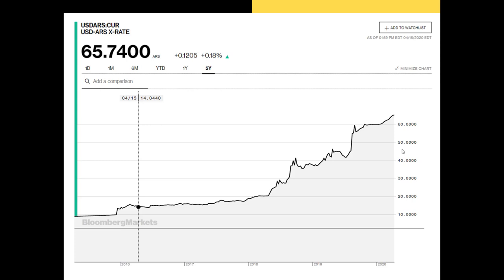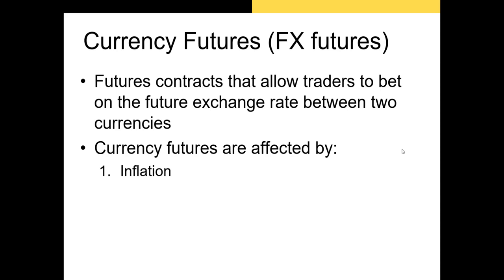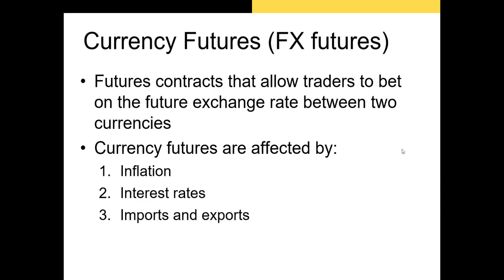On 4-15-2016, one US dollar bought 14.04 Argentinian pesos. Today, at the time I'm recording this video, one dollar buys 65.74 pesos. Another factor that influences currency futures is interest rates. The interest rates of two countries are often set above expected inflation rates, so that any bond issued at that interest rate will increase an investor's real purchasing power. Finally, the amount of trade a country has with other countries can influence the exchange rate between its currency and outside currencies.